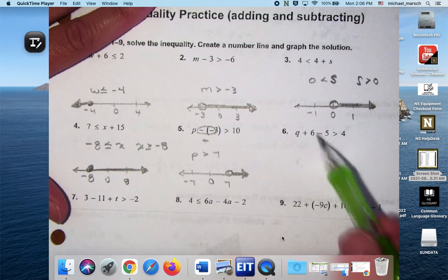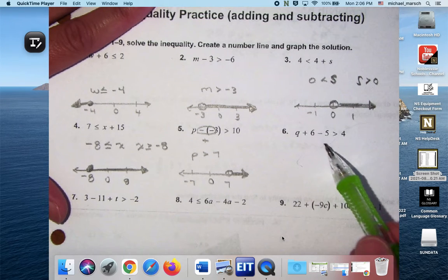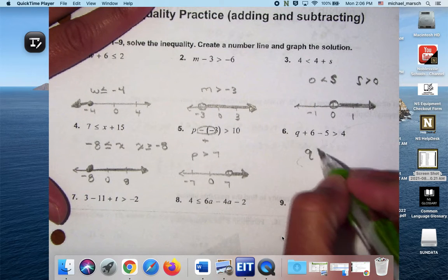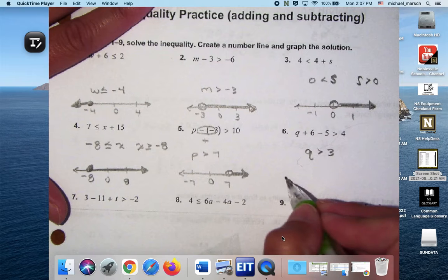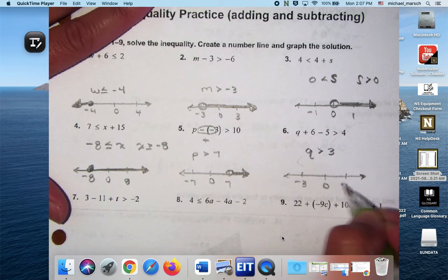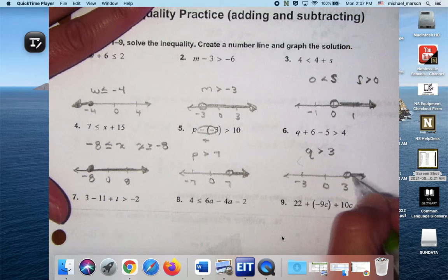And then for number 6, I would have combined these, and then I would have subtracted over here, so you would get Q is greater than 3. Open circle to the right.